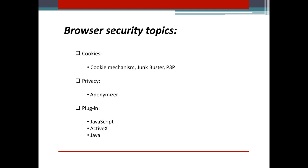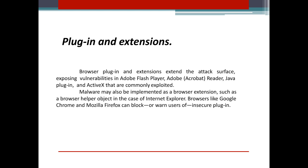The two topics we are going to cover are cookies, privacy, and plugins. What are plugins and extensions? Browser plugins and extensions extend the attack surface, exposing vulnerabilities in Adobe Flash Player, Adobe Acrobat Reader, Java plugin, and ActiveX that are commonly exploited. Malware may also be implemented as a browser extension, such as a browser helper object in Internet Explorer. Browsers like Google Chrome and Mozilla Firefox can block or warn users of insecure plugins.